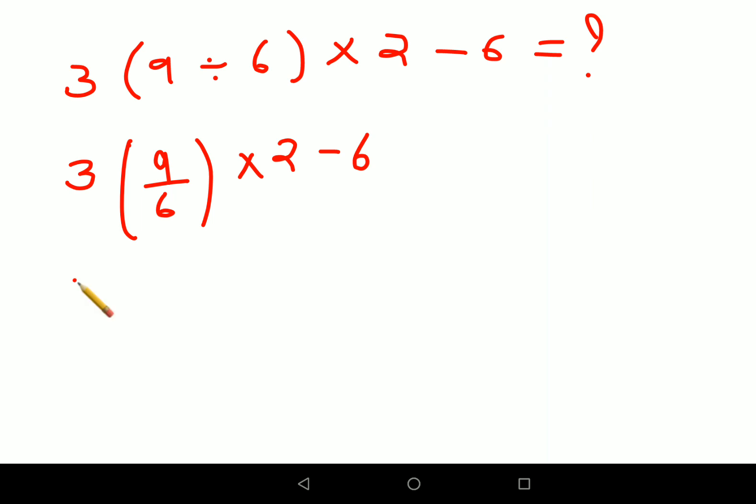So here what will happen is 3, 9 upon 6. So things are getting cancelled. Both of them go in 3's table. So this is 3 upon 2 and 3. So we have 3 upon 2 into 2 minus 6. So now if you see, we can cancel things out.